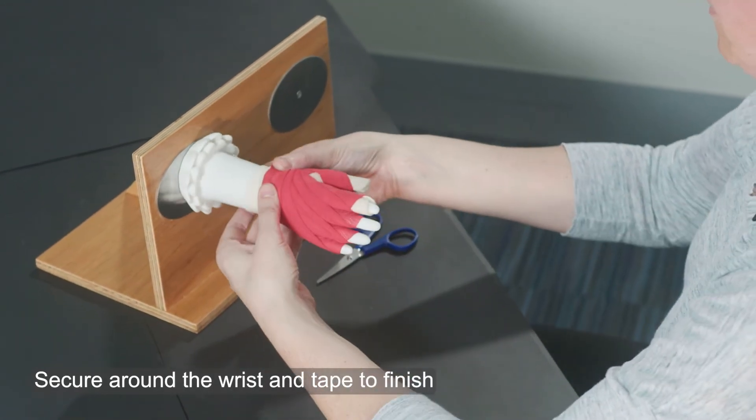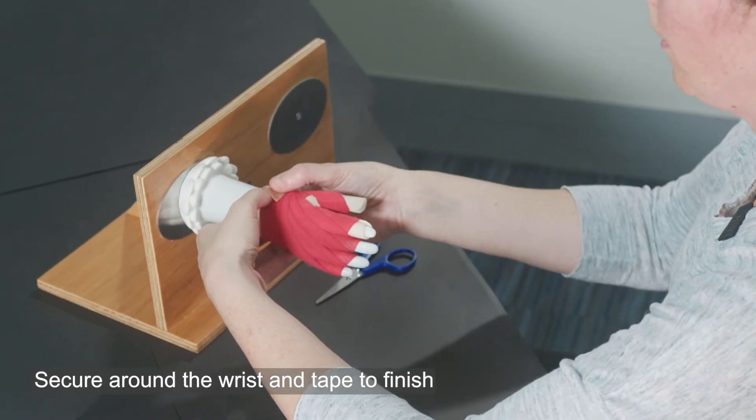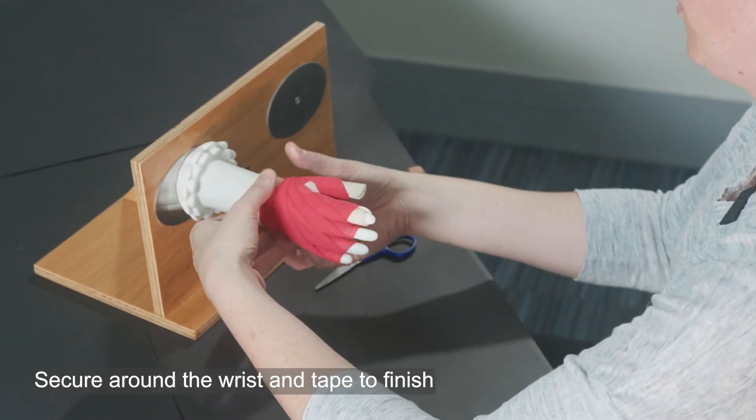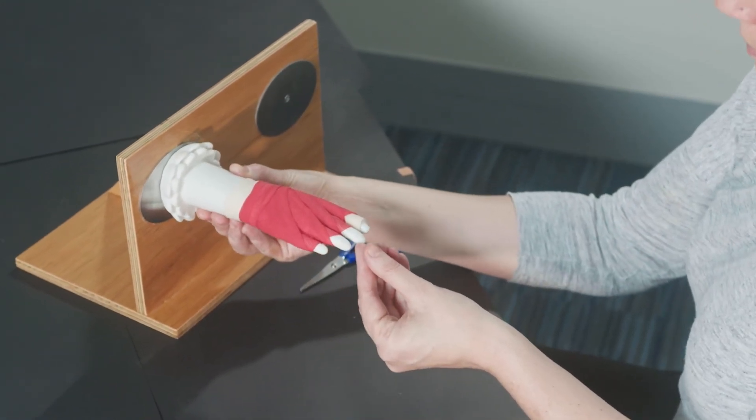Take your scissors. You're just going to get a little piece of tape, again all pre-prepared, and just secure that down. That's what it looks like at the back.